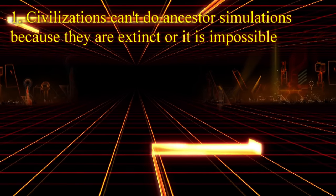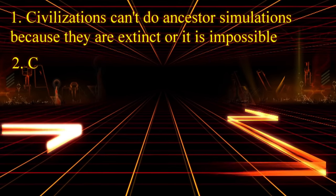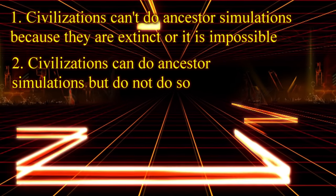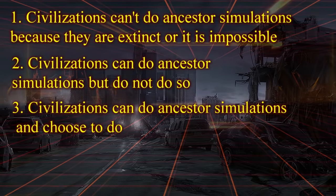Bostrom presents us basically three scenarios for the future. Number one: civilizations go extinct before acquiring the necessary technology to do ancestor simulations, or such simulations turn out not to be possible. Number two: civilizations who can perform ancestor simulations do not wish to do so. Number three: they can do ancestor simulations and choose to do so. These will feel pretty familiar to those who have seen the Fermi Paradox Compendium video where we contemplated ways in which a civilization might continue after reaching our current technological level.